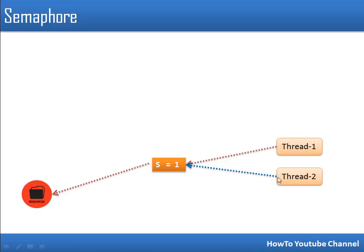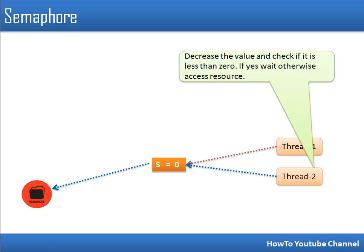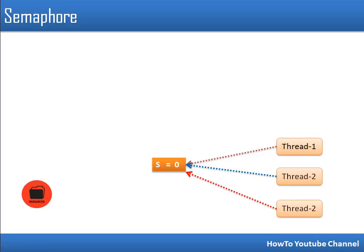A second thread also decrements S, making it zero — not less than zero — so it also gets access to the resource. But if a third thread tries to access, it decrements S to minus one, which is less than zero, so that thread has to wait and cannot access the resource. Only two simultaneous accesses are allowed. When one of the first two threads finishes, it increments S, and the third thread starts its execution.